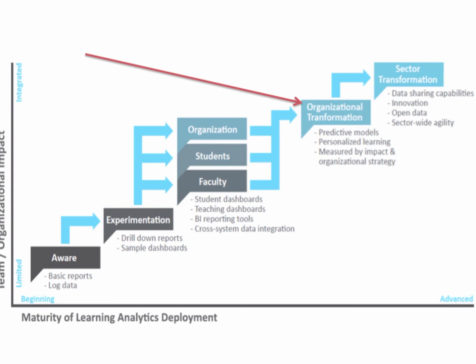Theoretically, if you carry that through to the peak aspect, there's actually a systemic or sector-wide transformation where university systems, for example, are better able to compete internationally because they make effective use of data. That influences how decisions are made and how assessments are produced for the sector as a whole in comparison to their peers.